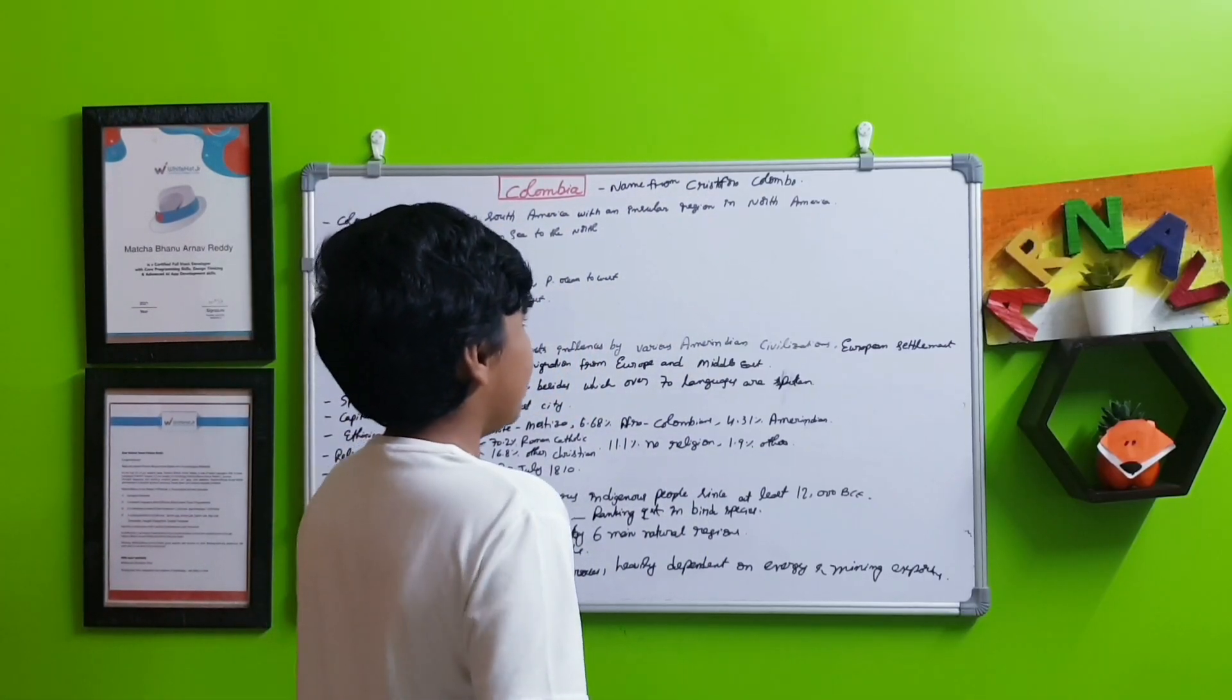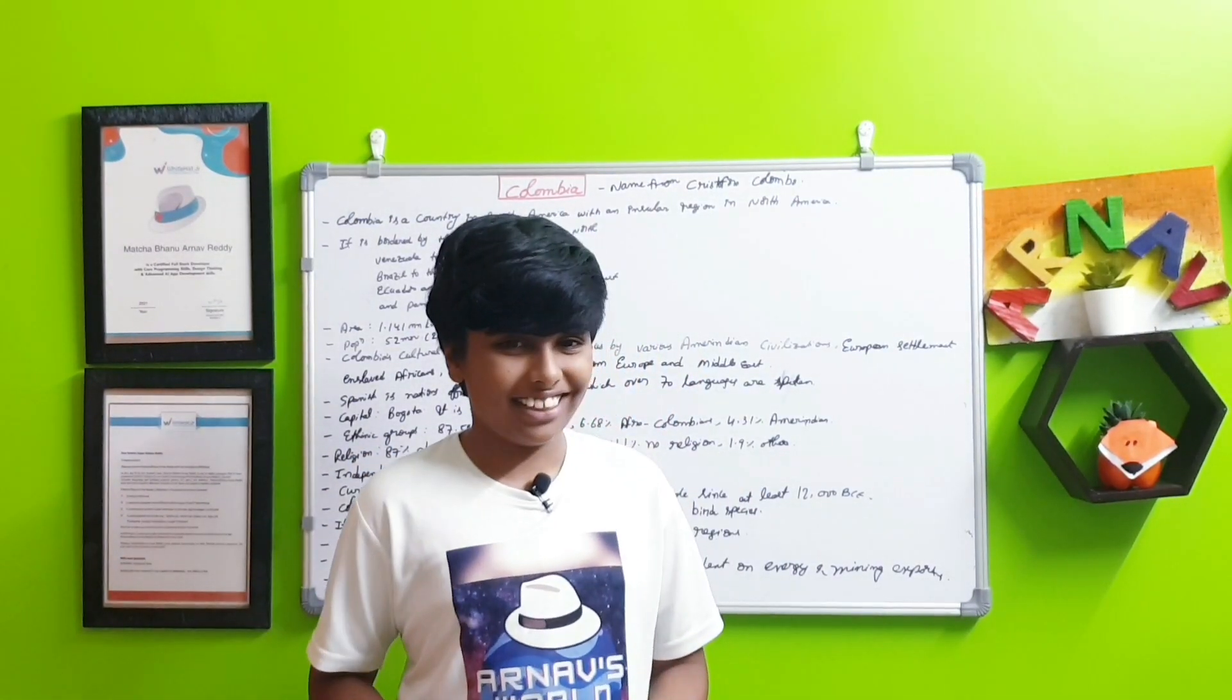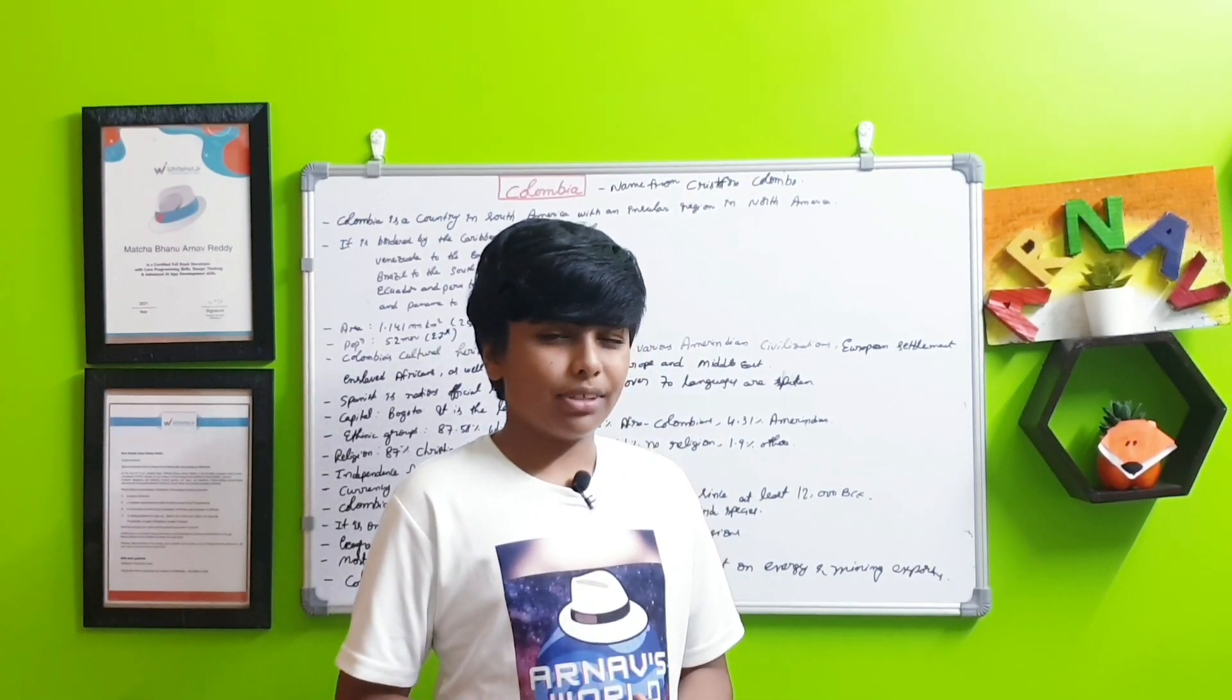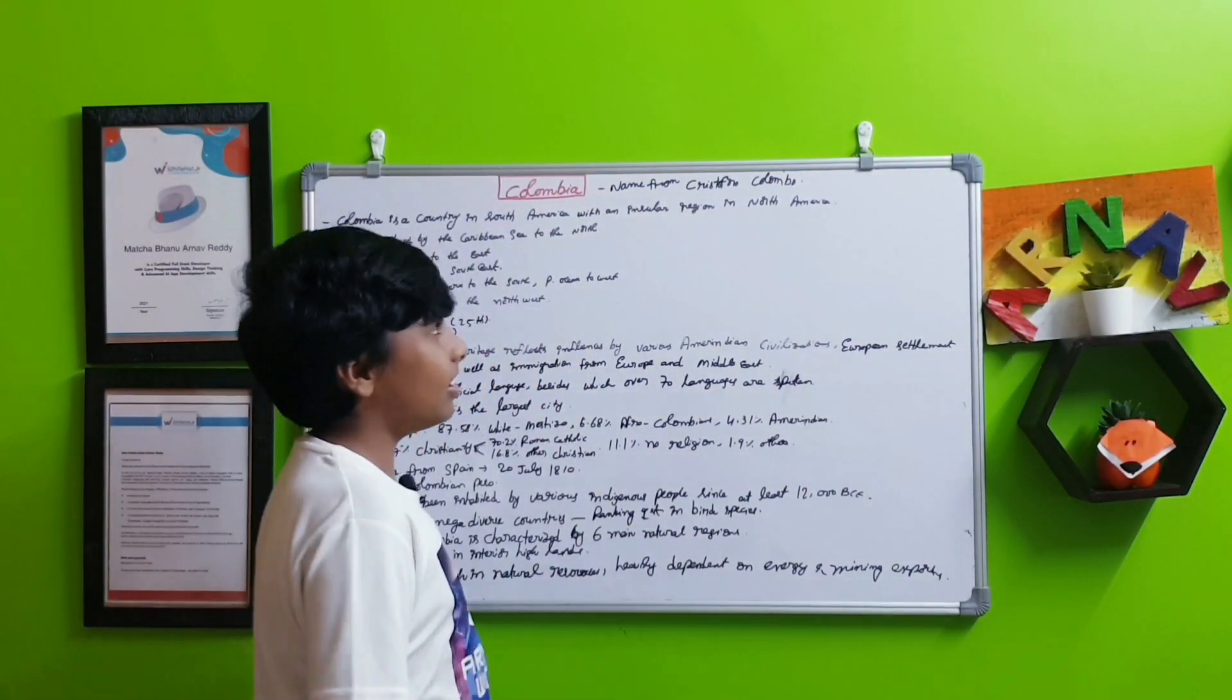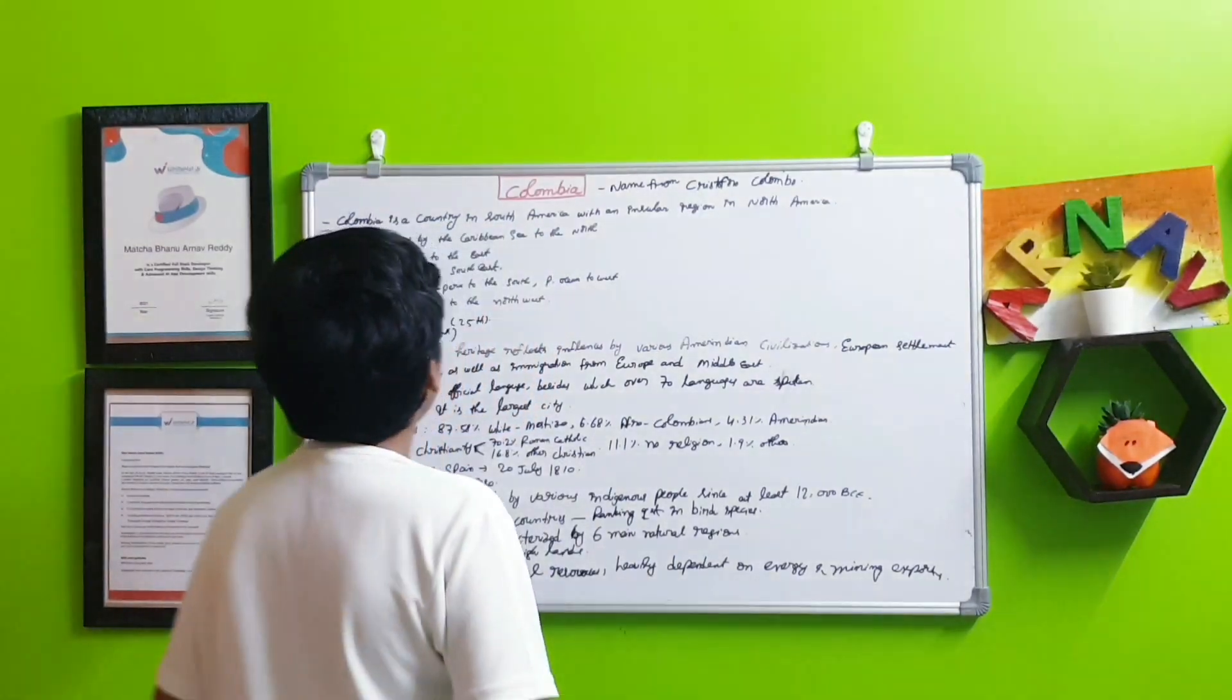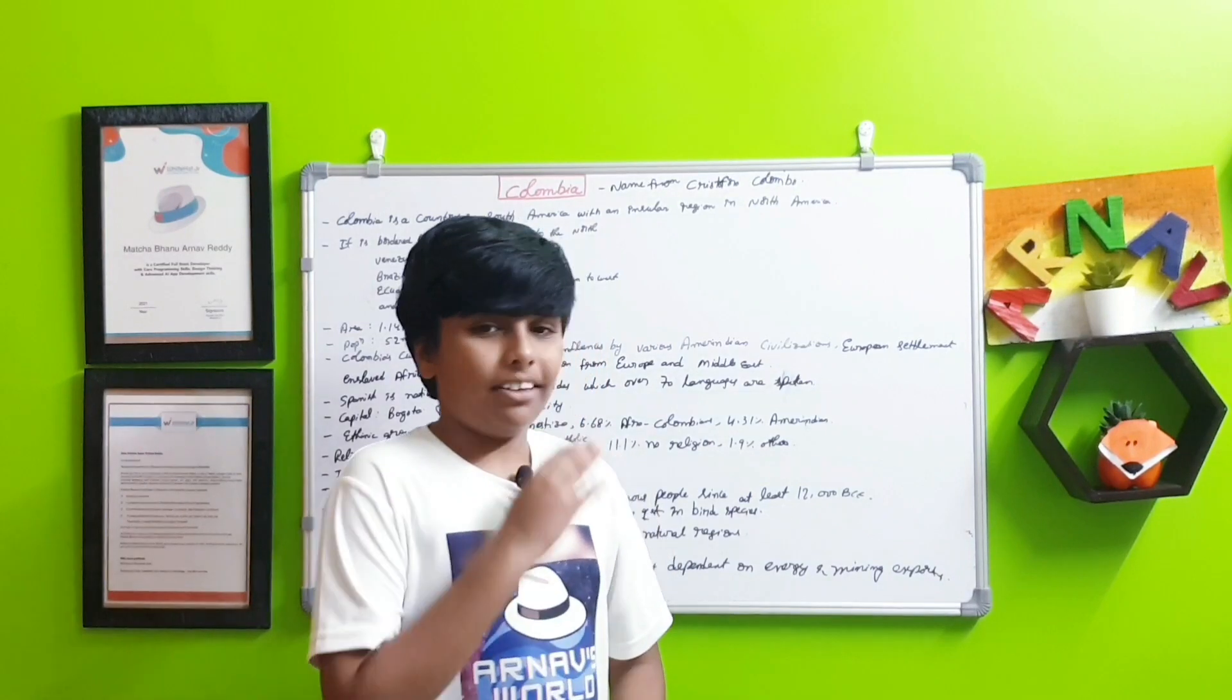It is kind of a transcontinental country with some of its region in North America, meaning just tiny islands, while most of its remaining area is in South America. Its name comes from Christopher Columbus, and with this exact name with the prefix British, there's a province in Canada called British Columbia.